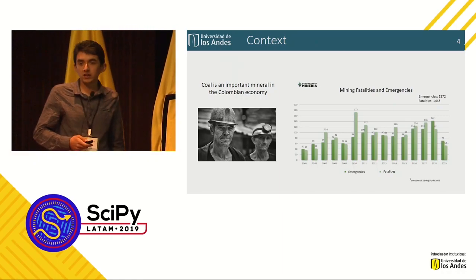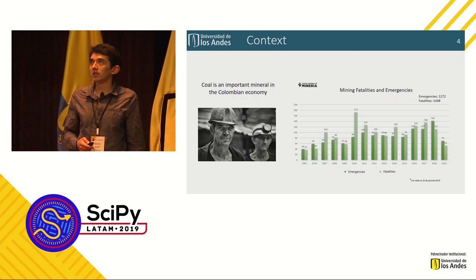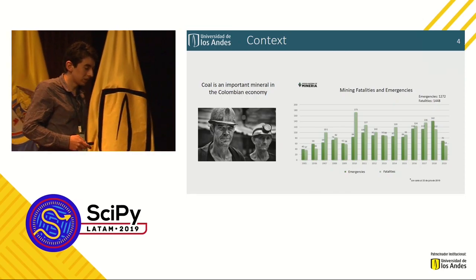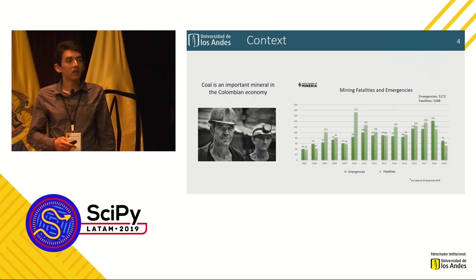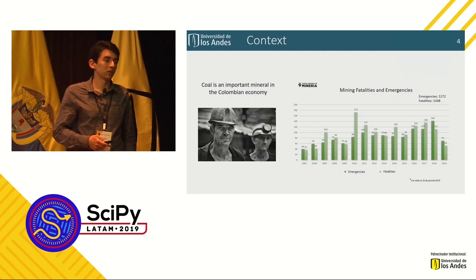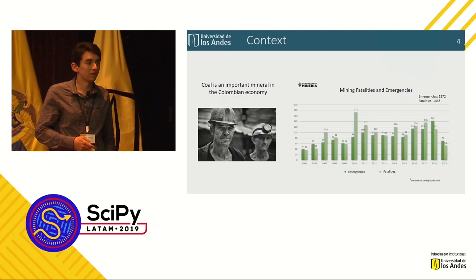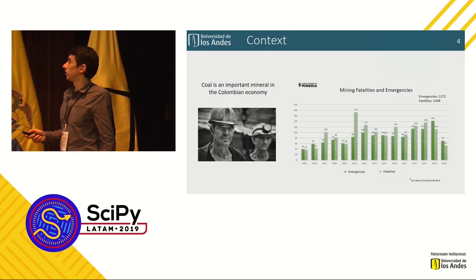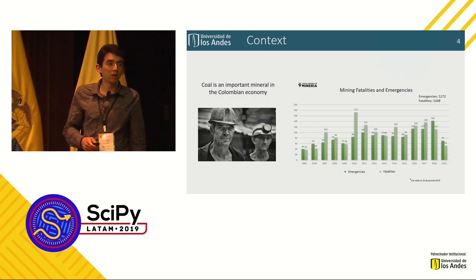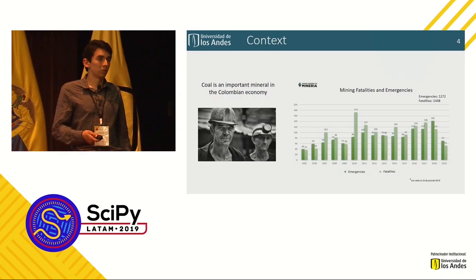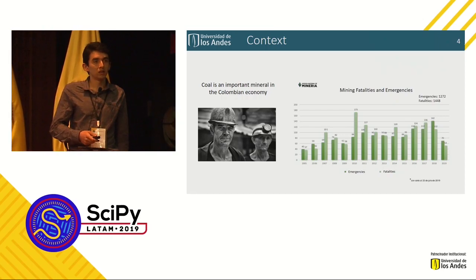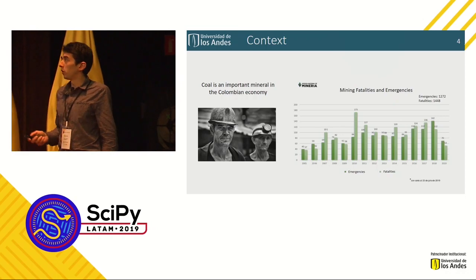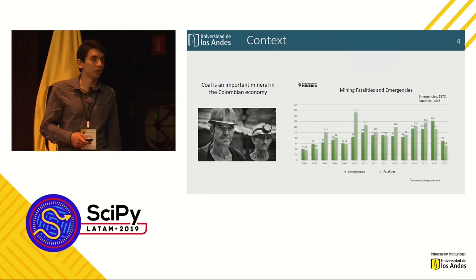In Colombia, coal production has a great impact on the country's economy. Colombia is the largest coal producer in Latin America. However, there is an industrial safety problem regarding explosions and poisoning of workers in underground mines. This figure shows the fatalities and emergencies in Colombia — an important number of accidents because coal production generates toxic and explosive gases.